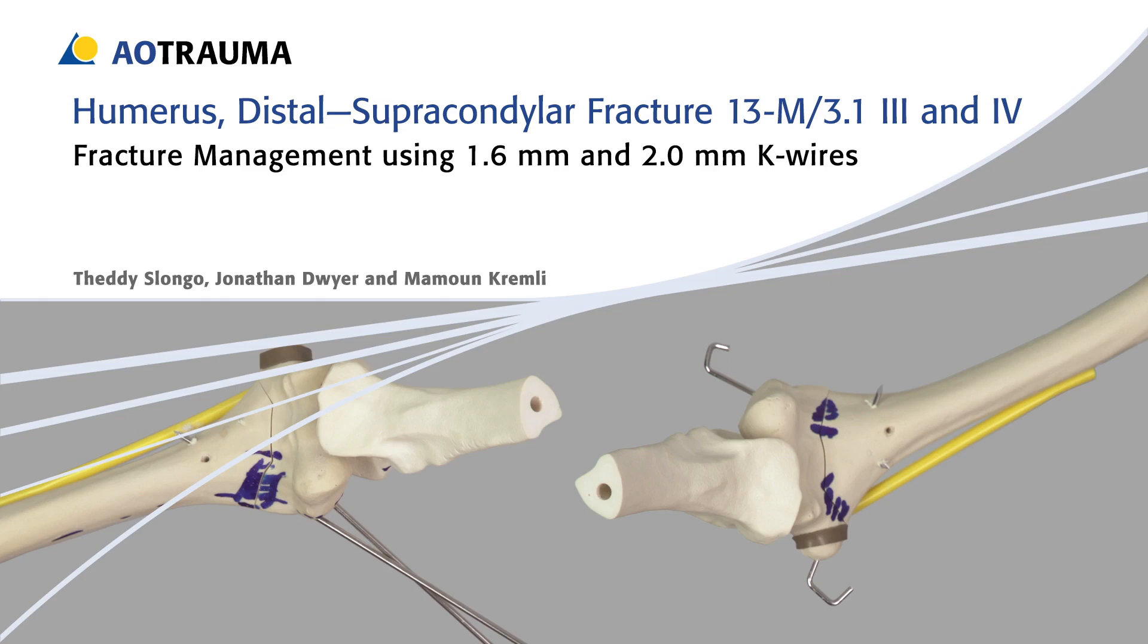Humerus Distal Supracondylar Fracture 1-3-M-3-1, 3 and 4 Fracture Management Using 1.6 mm and 2.0 mm K-Wires.